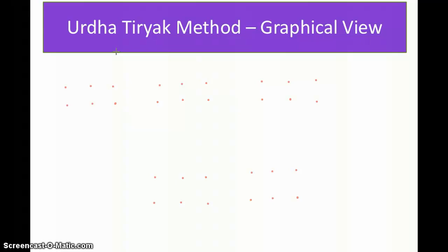Hello everyone, welcome back to the session. This session is going to cover some of the basic techniques using which we can multiply any numbers — there is no specific case restriction. We have named the method Urdha-Tiryak: 'Urdha' means up and 'Tiryak' means crosswise. This method involves up and crosswise action among the numbers, and we will see how this name matches with the action we are going to do, and finally how it helps us do multiplication.